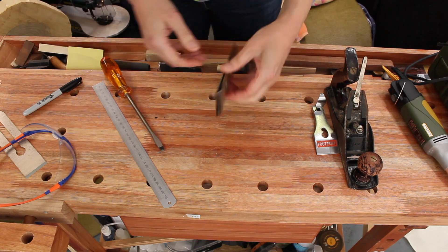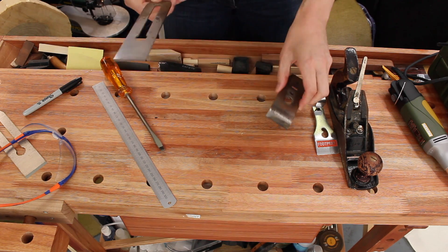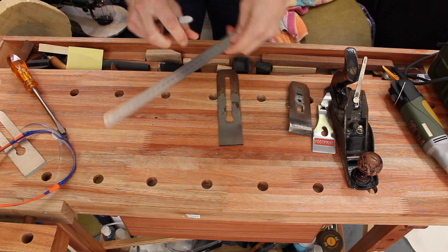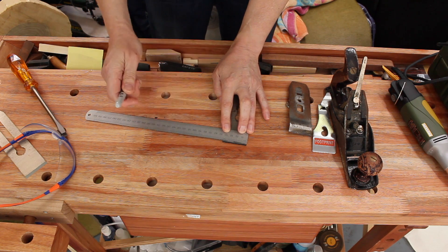One way of doing that is with a notched blade. What I've done here is I've set the chip breaker a millimeter and a half back from the edge of the blade and marked it with a sharpie in order to give me the depth of the notches.